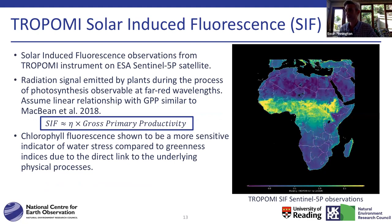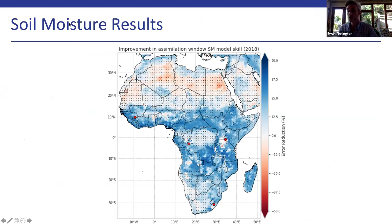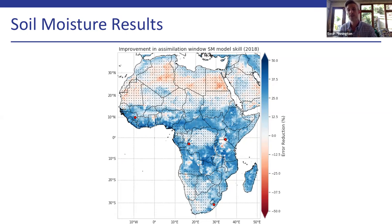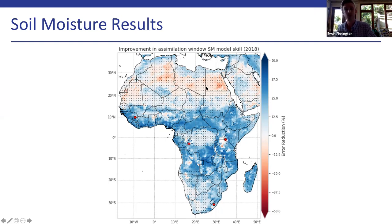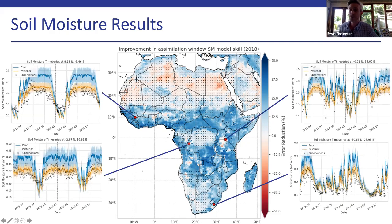We're now looking at TROPOMI SIF observations as well. For the soil moisture results over Africa, we show unbiased root mean squared error of the model skill, where blue is good and red is bad. Most places we're getting blue, meaning improved model skill in the posterior estimates after assimilation over the whole African continent with one year of data. We do have some reds in the Sahara, but the hatching corresponds to areas where the satellite observations aren't of sufficient quality to use in the assimilation algorithm anyway.